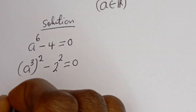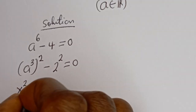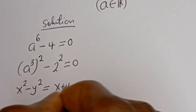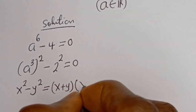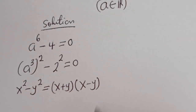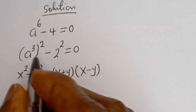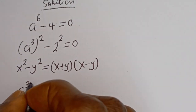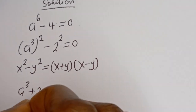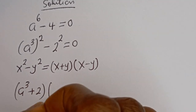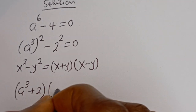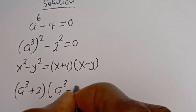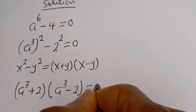That is, if you have x squared minus y squared, this is equal to x plus y bracket x minus y. Then we have: a to the power of three plus two, bracket a to the power of three minus two, is equal to zero.